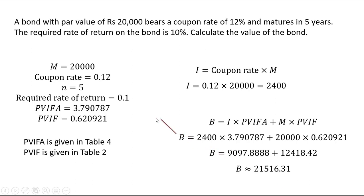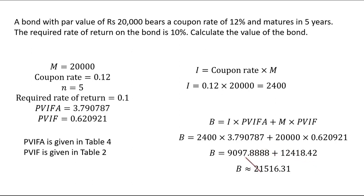Let me break this up and explain again. I am getting 2,400 for 5 years, so approximately 12,000 rupees total. But I'm not getting 12,000 rupees today — I'm getting it in installments, so it is as if I am getting only 9,097 rupees today. And the 20,000 rupees I give to the government — it is as if I am going to receive only 12,480 rupees as of today, even though I will get 20,000 rupees after 5 years. Adding them up, it is 21,516 which is more than 20,000, which means this is a profitable investment.